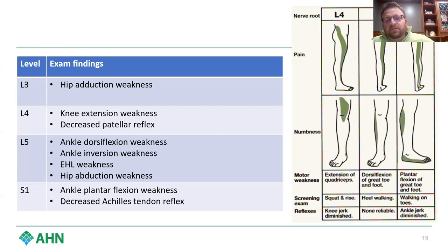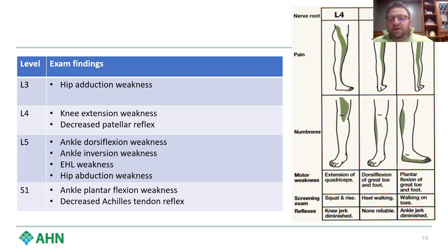These aren't written in stone, but they're really important things to think about. When you see that person with foot drop, you really need to think about L5 nerve root compression — whether that's an L5-S1 far lateral disc hitting the L5 nerve root, or a L4-5 paracentral disc hitting the traversing L5 nerve root.